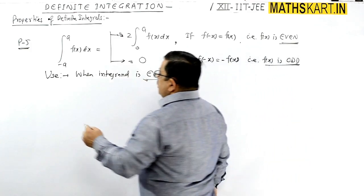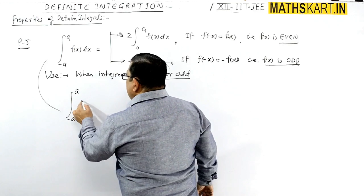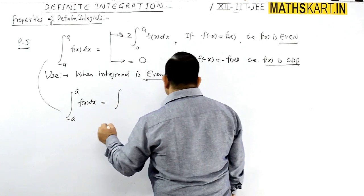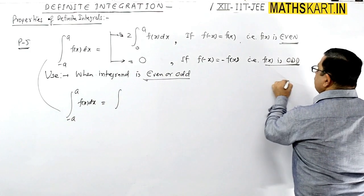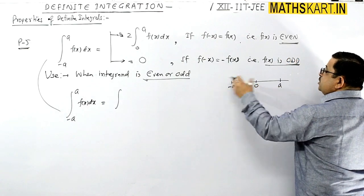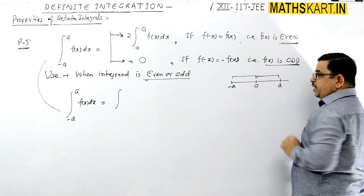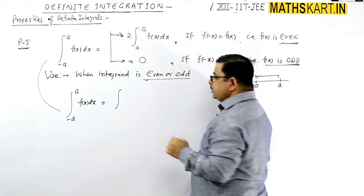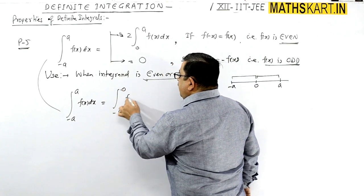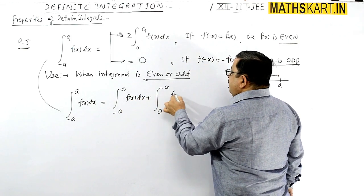Now how do we do the proof? In the proof, if the function is given as the integral of f(x) dx, we will break it into two parts. Because the total length is given from minus a to a, we split it as: from minus a to 0 of f(x) dx, plus the second part from 0 to a of f(x) dx.